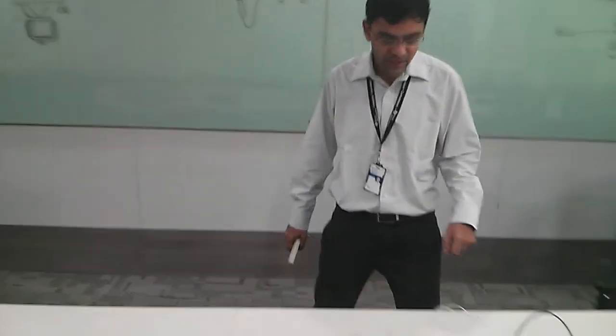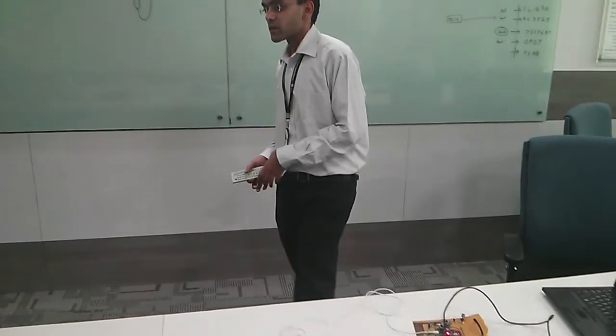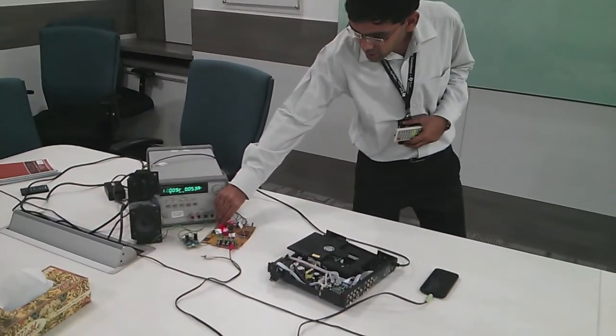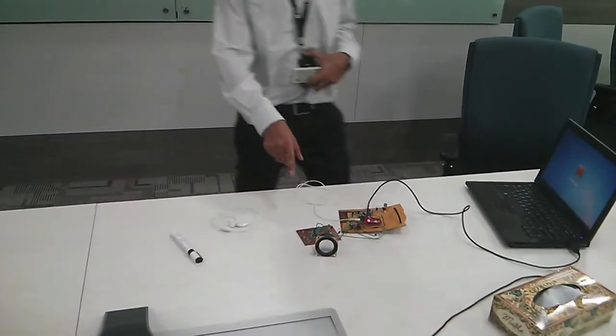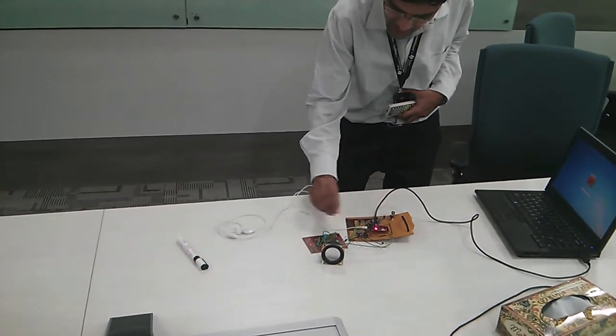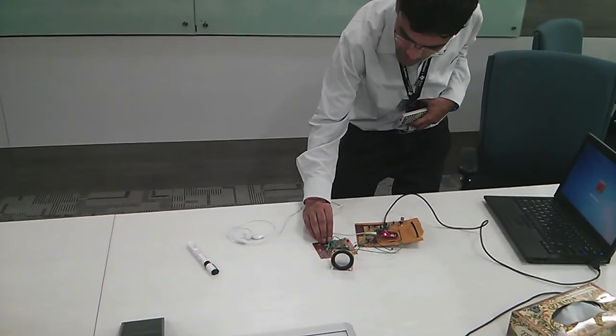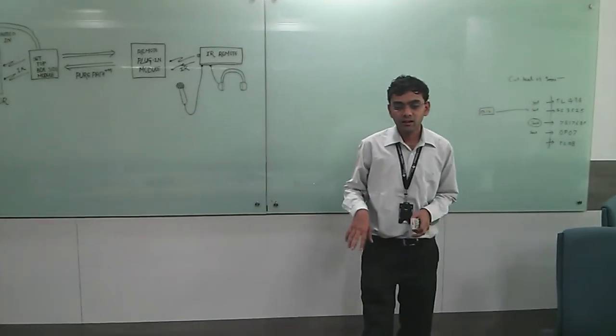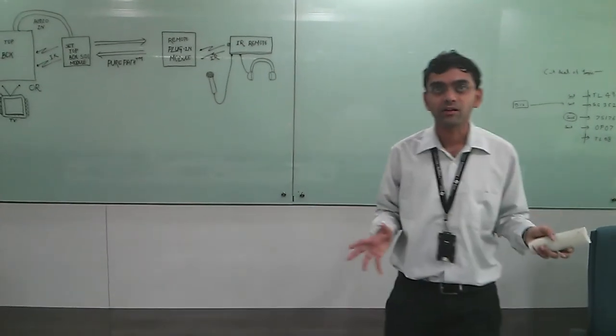Finally I come to the feature of finding a lost remote. I press a button on the set-top box which triggers a buzzer on the remote, which can be reset using a button on the remote. This way you can locate the remote within few tens of meters inside your house.